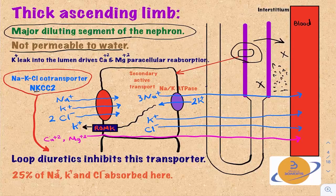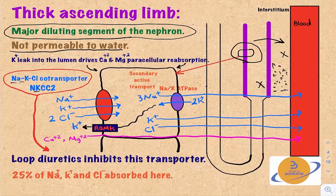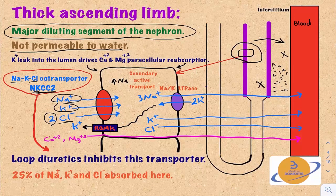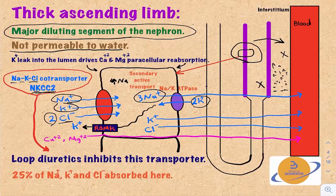In a cross-section of the thick ascending limb, we see cuboidal cells with an apical side facing the tubular lumen and a basolateral side facing the medullary interstitium. At the apical side, the sodium-potassium-chloride cotransporter NKCC2 moves one sodium, one potassium, and two chloride molecules from the tubular lumen into the cell. The Na-K ATPase at the basolateral side then pumps three sodium molecules out into the interstitium and brings two potassium molecules in — this secondary active transport drives continued sodium entry.